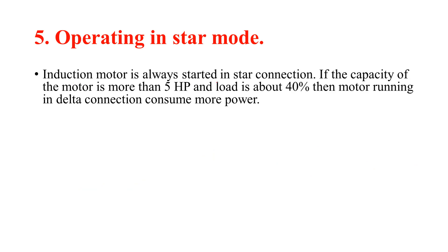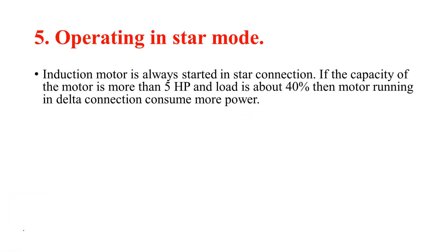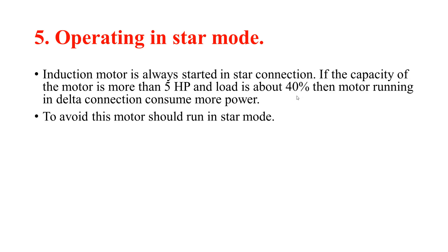The induction motor is already started in star connection. If the capacity of the motor is more than 5 HP and load is about 40%, then the motor running in delta connection consumes more power. To avoid this, the motor should run in star mode.